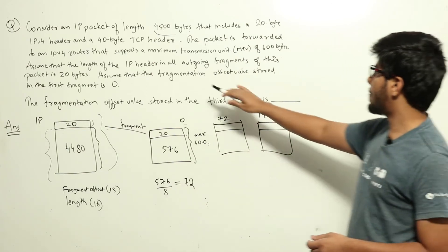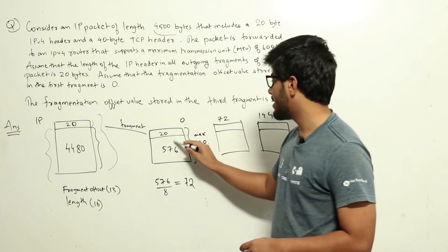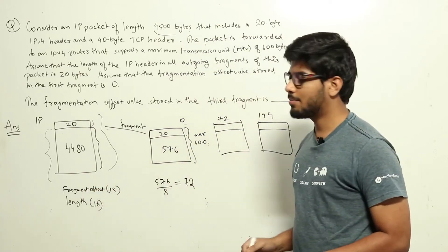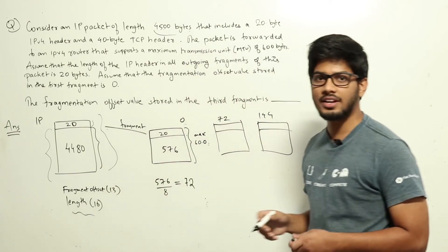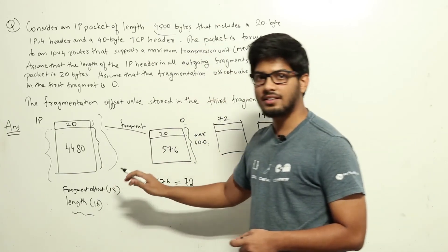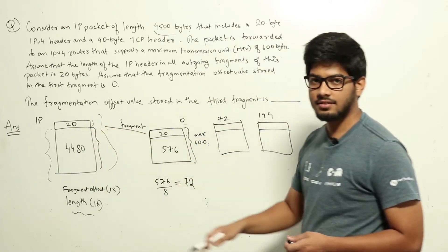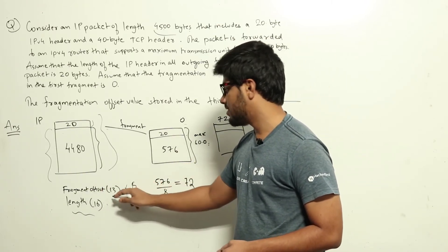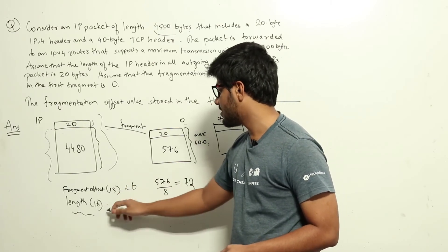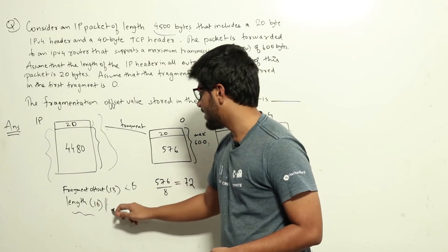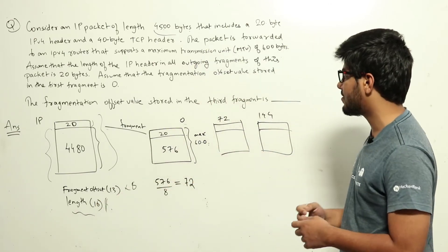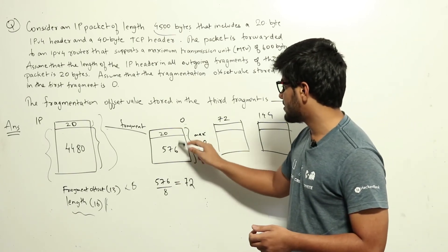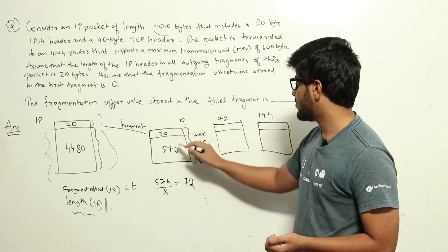A key property of IP fragmentation is that the data length must be a multiple of 8. The reason is that the fragmentation offset field is a 13-bit number in the IP header, while the total length is a 16-bit number. The offset value must be multiplied by 8 to recover the actual byte count — a scaling factor is applied to compress a 16-bit length into a 13-bit field. Since 580 is not a multiple of 8, the maximum multiple of 8 less than 580 is 576.